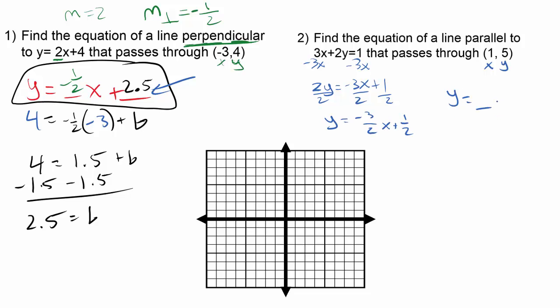And when I'm writing the equation of the line, since my new line that I'm trying to find is parallel to y equals negative 3 over 2x plus 1 half, since they're parallel, I know that it's got to have the same slope. So I can fill that in, negative 3 over 2.